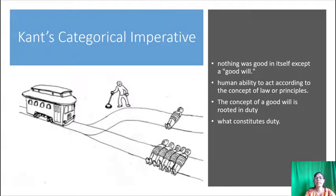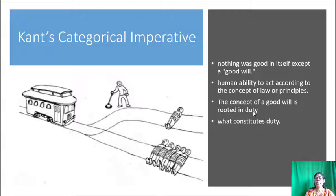The first one under deontological theories is Kant's Categorical Imperative. Immanuel Kant believed that nothing was good in itself except a goodwill. A goodwill was understood by Kant to mean the human ability to act according to the concept of law or principles. The concept of a goodwill is rooted in duty, and only when an individual acts from a sense of duty does the action have any moral worth.